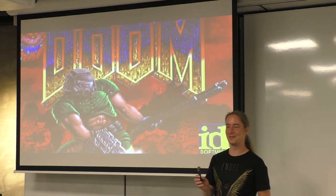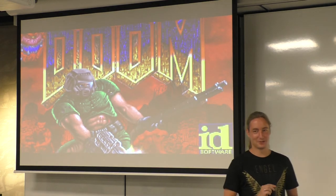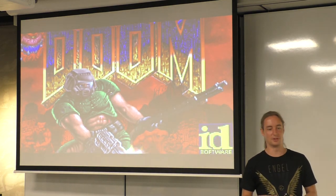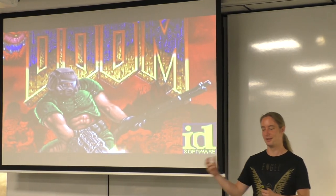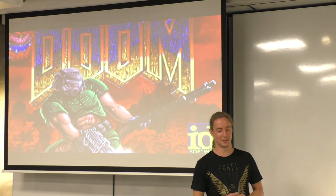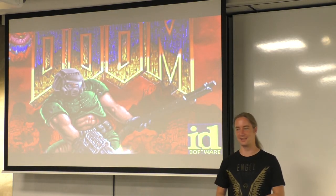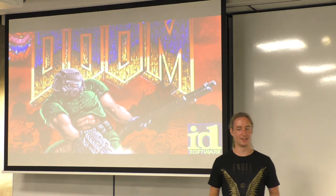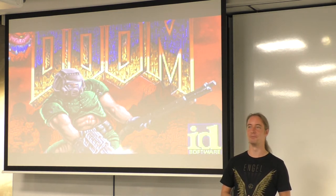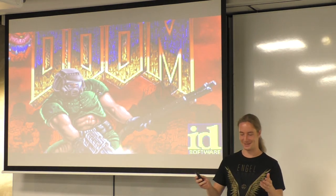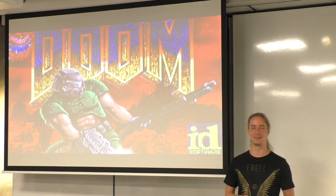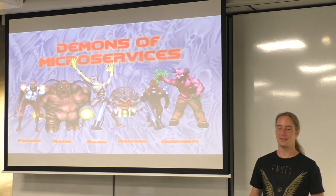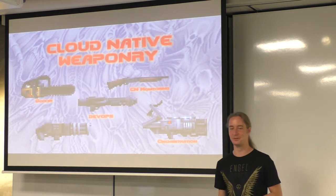Doom is a game about scientists on Mars opening a gate to hell to harness its energy as a clean energy source. Of course it doesn't work out, and the demons come out of hell to overtake Mars, Earth, everything. Only the Doom Guy can fight them. My analogy — how I managed to shoehorn this into the talk — is: if you do microservices, be aware of the demons on the other side, and be aware of the weapons you can use to battle them.